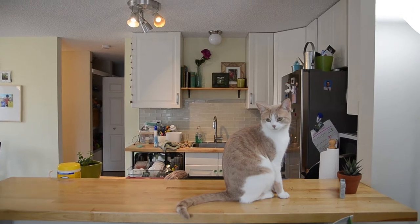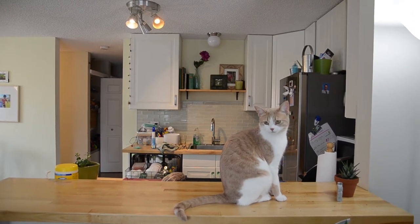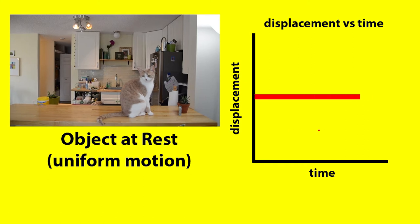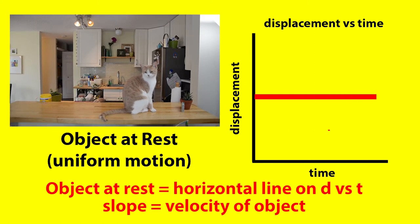First we've got an object at rest. This is my cat. She's not moving. She's at rest. Here's what a graph is going to look like. It's a nice horizontal line. An object at rest makes a horizontal line on a displacement versus time graph.